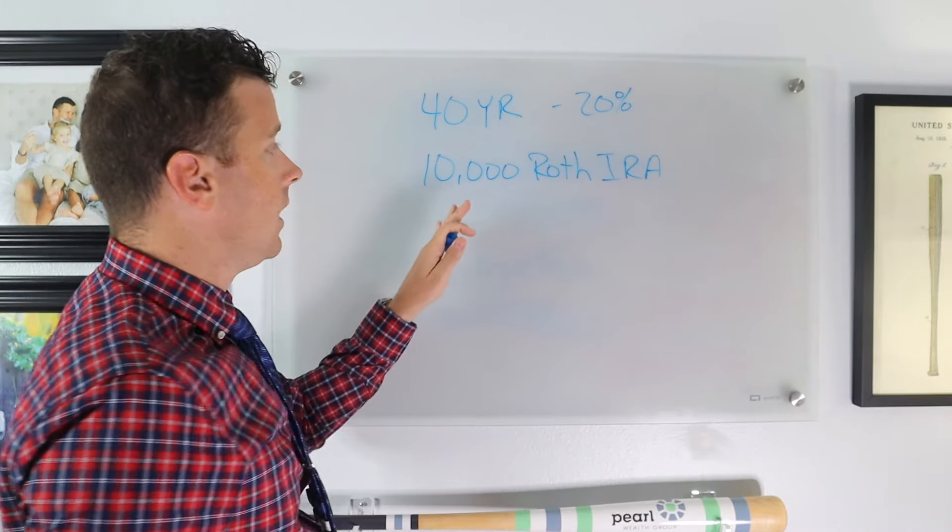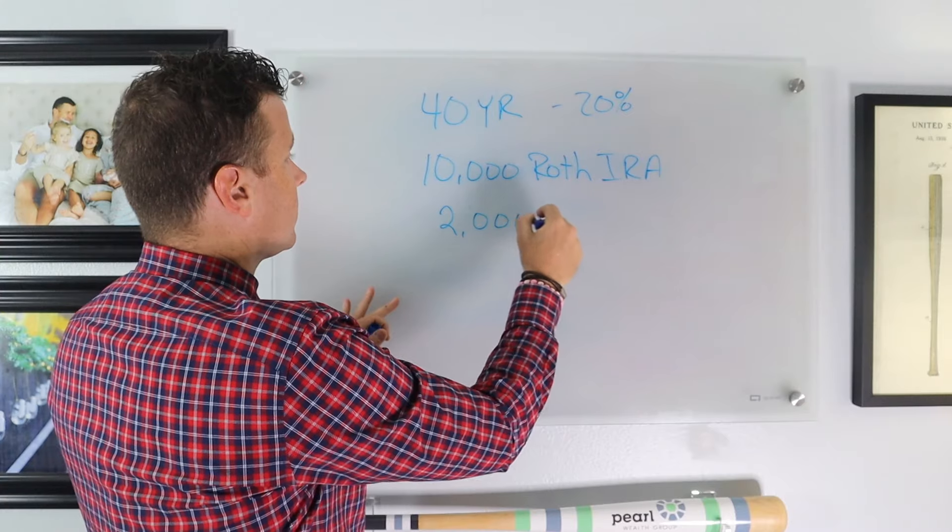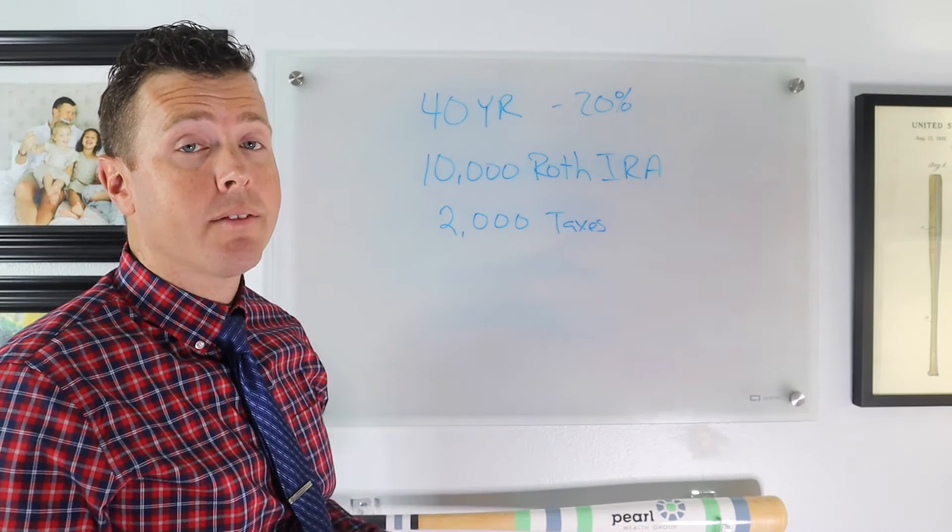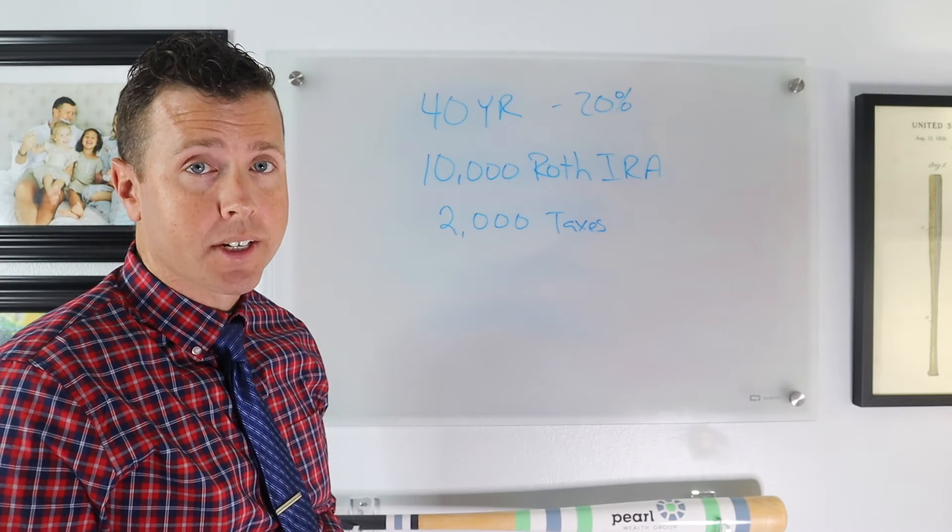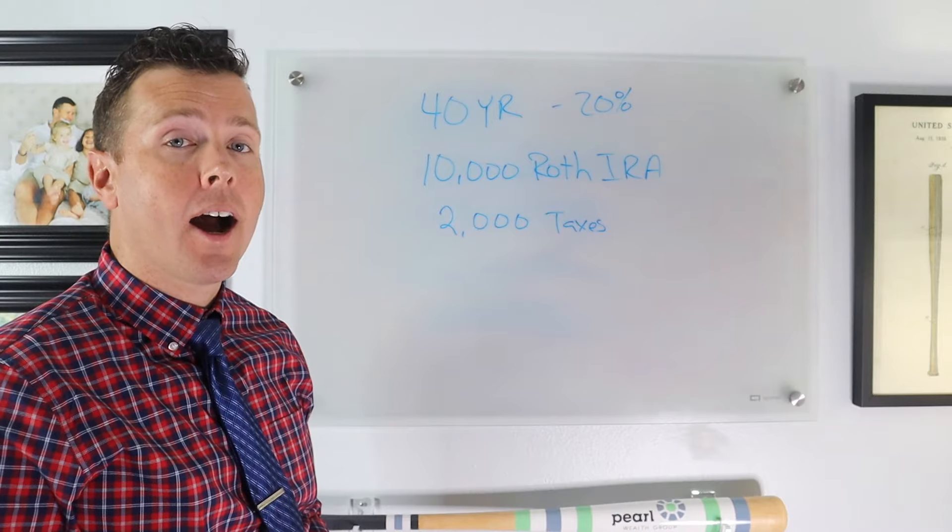So 20% of $10,000 is $2,000 in taxes. Now let's say this 40 year old says I don't have an extra $2,000 in savings. What I'll do is I'll take the tax money out of my IRA.